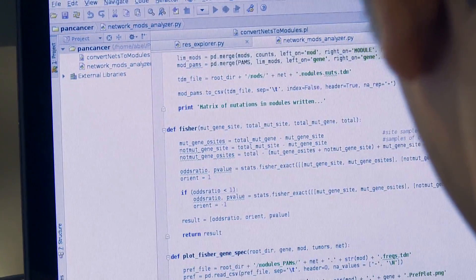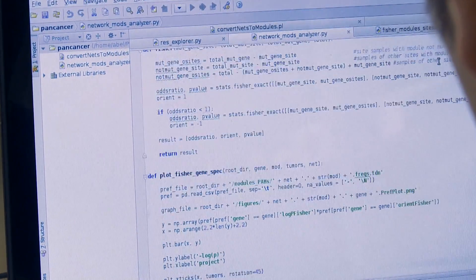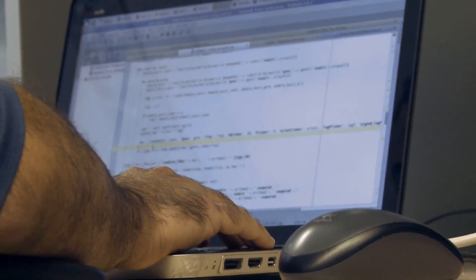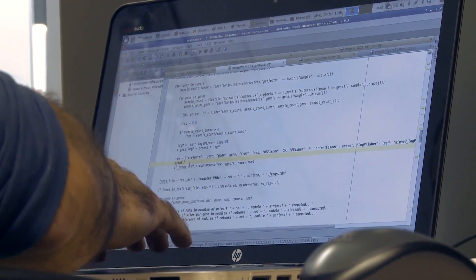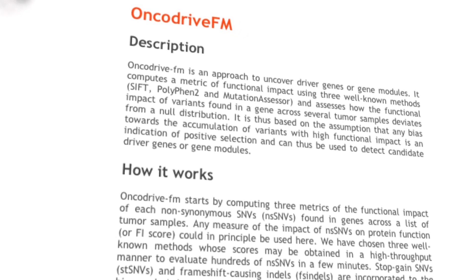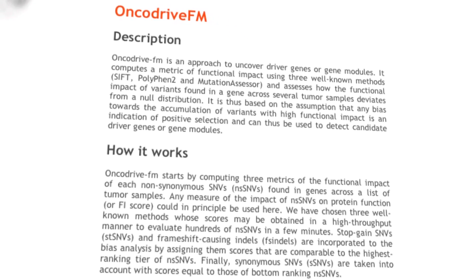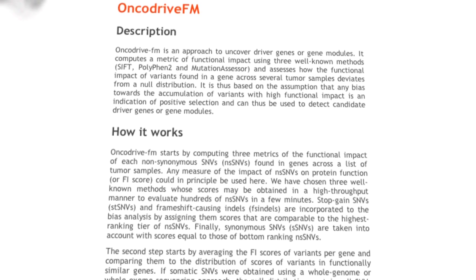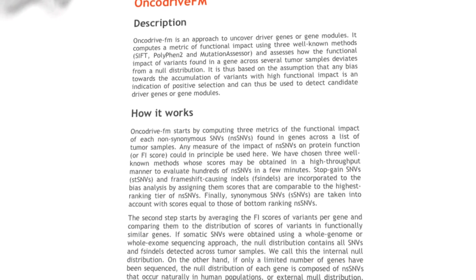We have developed two such methods in our group. One called OncodriveFM, which identifies genes that exhibit an abnormal excess of high functional mutations — these genes are normally tumor suppressors. We have developed a second method called OncodriveClust, which identifies genes that tend to have mutations clustered in certain positions of the protein sequence. These genes are normally oncogenes.